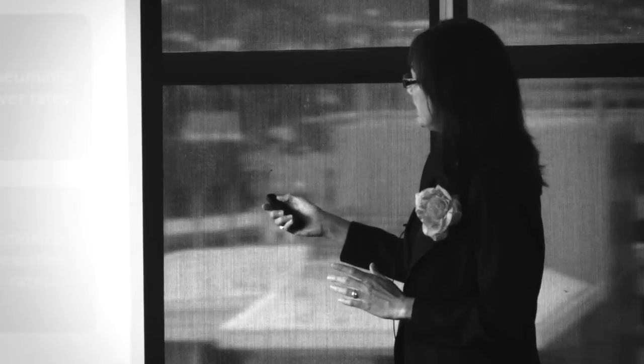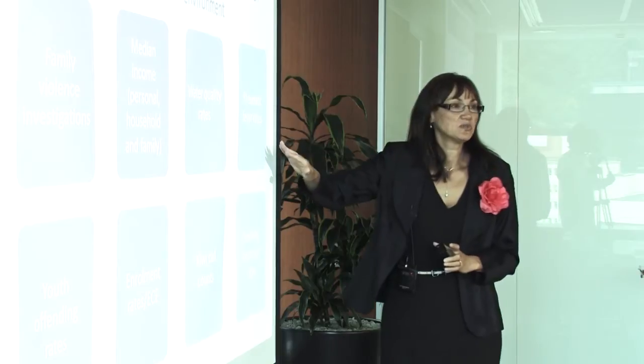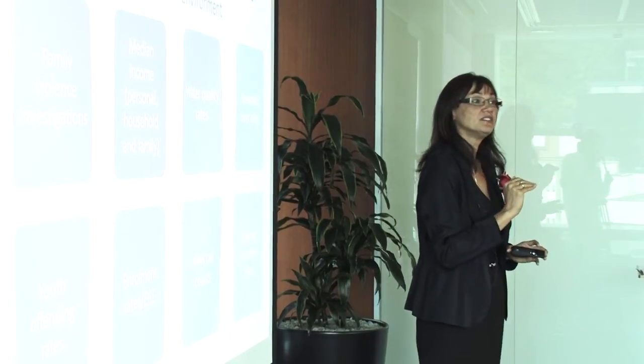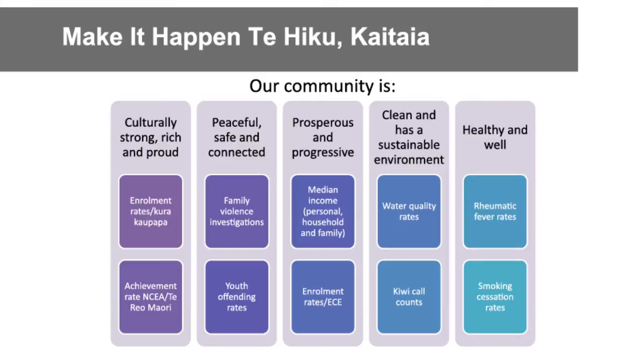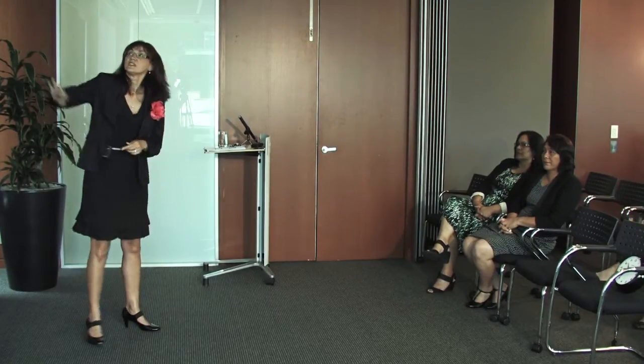For example, for 'our community is healthy and well,' one of the headline indicators is rheumatic fever rates. For rheumatic fever rates in Northland, what we want to do is turn the curve down. And for 'our community is culturally strong, rich and proud,' one of the example indicators is enrolment rates for kura kaupapa — what they want to do there is turn the curve up. So that's an example of a population outcomes framework with five population outcomes and ten indicators.